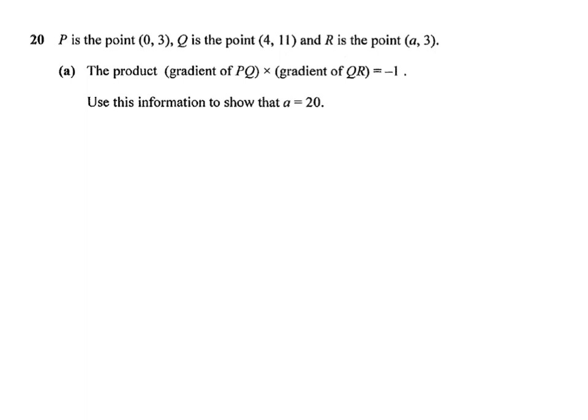Question number 20. P is the point (0,3), Q is the point (4,11), and R is the point (a,3). It's given to us that the product of the gradient of PQ times gradient of QR equals negative 1.